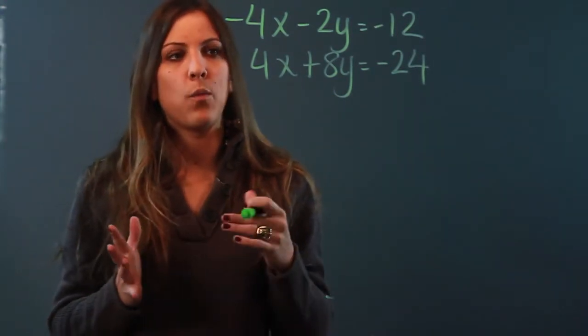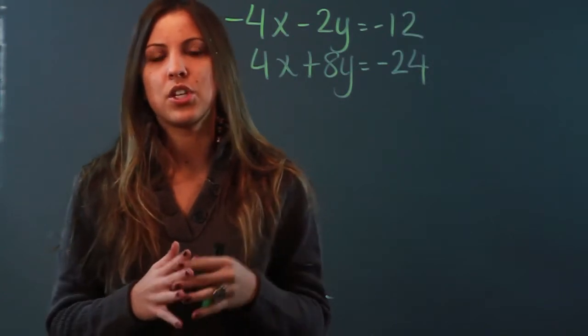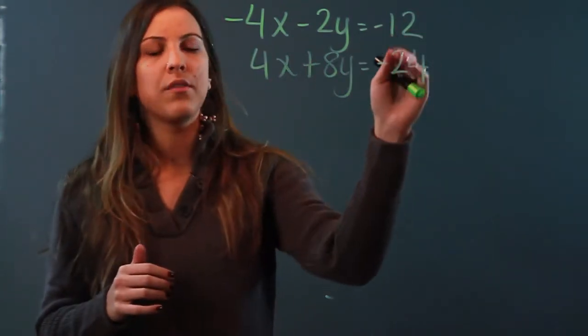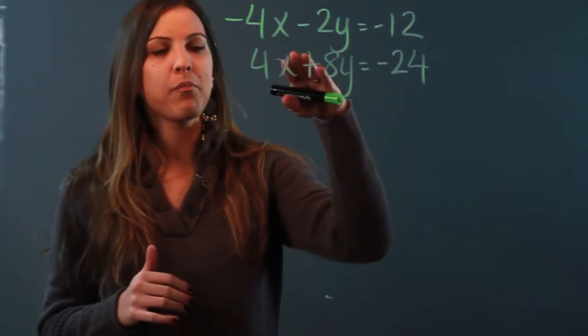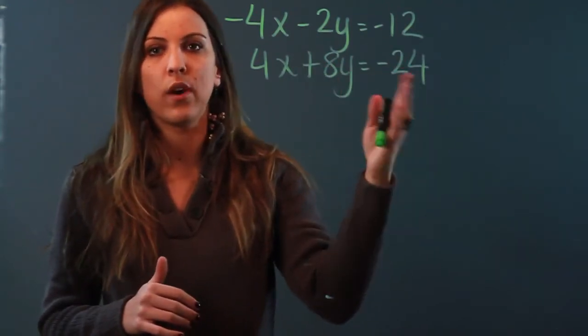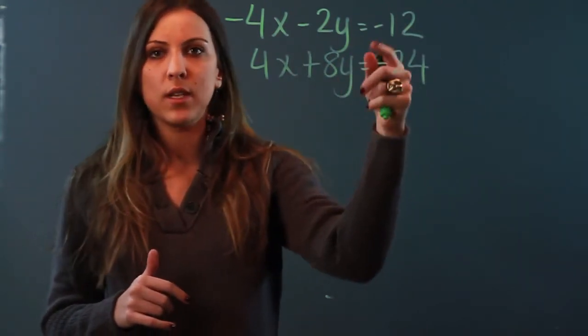The reason being is when you start to solve a system by substitution you have to make sure that one of the equations is solved for one of the variables. So it has to look like y equals or x equals and neither of these equations look like that.